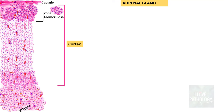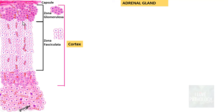The first zone is called Zona Glomerulosa, because the cells are arranged in the form of glomerulae — basically clusters of cells. The next one is Zona Fasiculata, which forms the major chunk of the Cortex and contains cords of polygonal cells. These are lightly stained because they contain abundant lipid, and they are separated by a delicate vascular network — you can see those blood vessels.